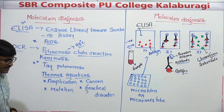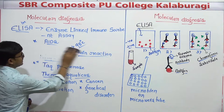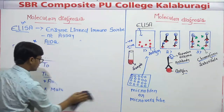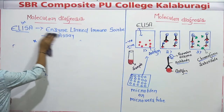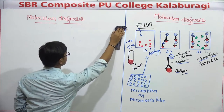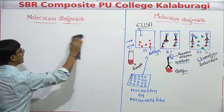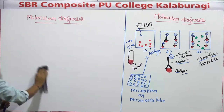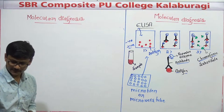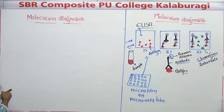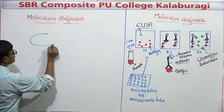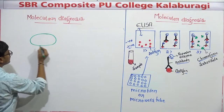Now let us discuss another method to identify disease at an early stage: the hybridization method using rDNA technology. By using rDNA technology also, you can identify mutation.